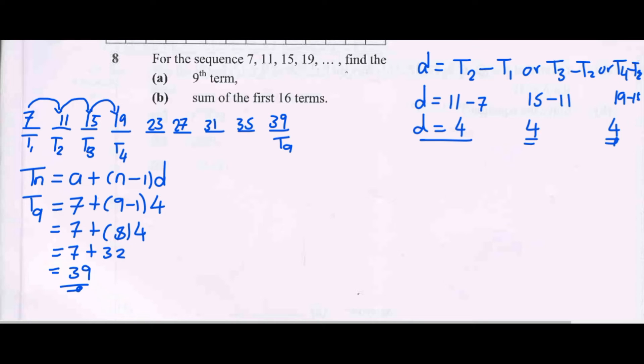Now for question B, we need the sum of the first 16 terms. So we need more terms up to 16 then add them. To simplify that, we will use the formula: sum of n terms, Sₙ = (n/2)[2a + (n-1)d].